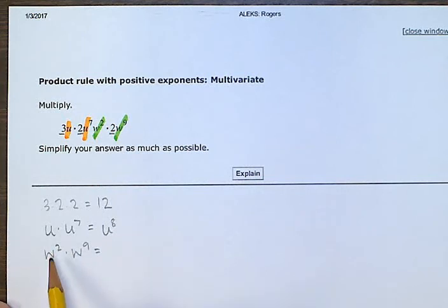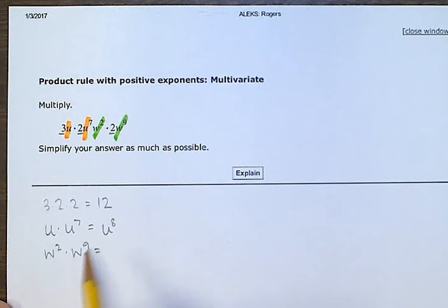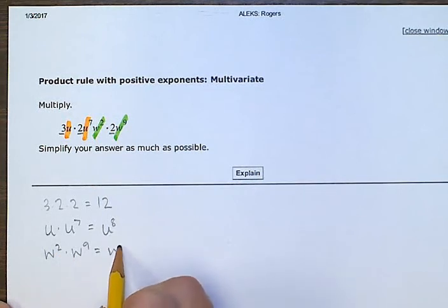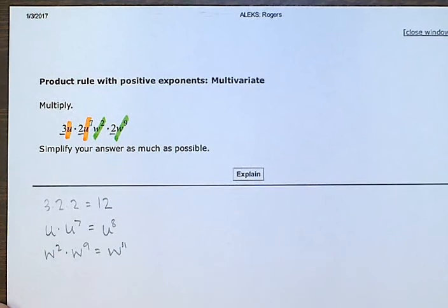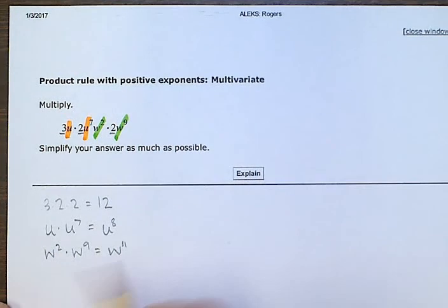So we get a w times a w times 9 more w's. So we get 11 w's multiplied together. That's what the power exponent means. All those w's are getting multiplied together. 11 of them.